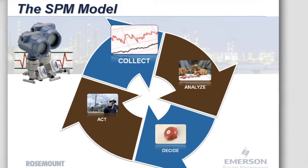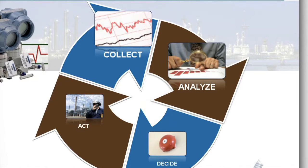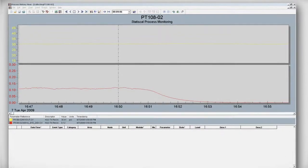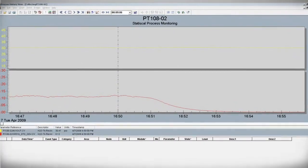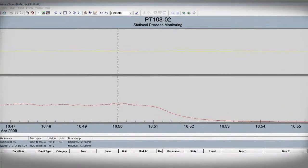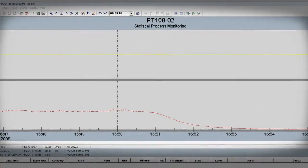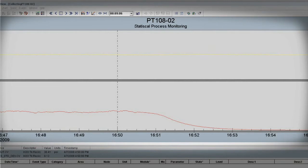The second step is to analyze the information you have collected and to establish the baseline. As you can see here, the process variability calculated by SPM has decreased by over 50% from our baseline value. This is a direct result of me plugging the impulse line just a few moments ago.